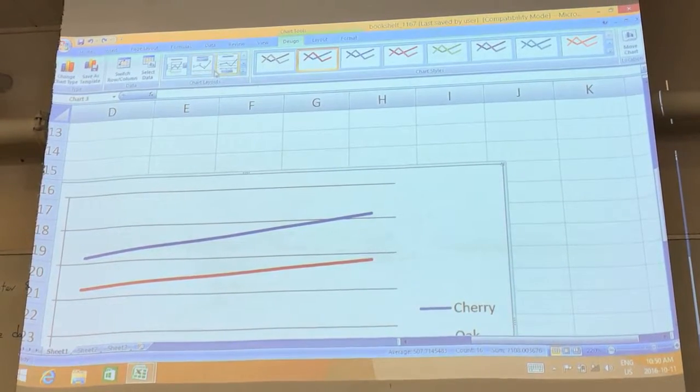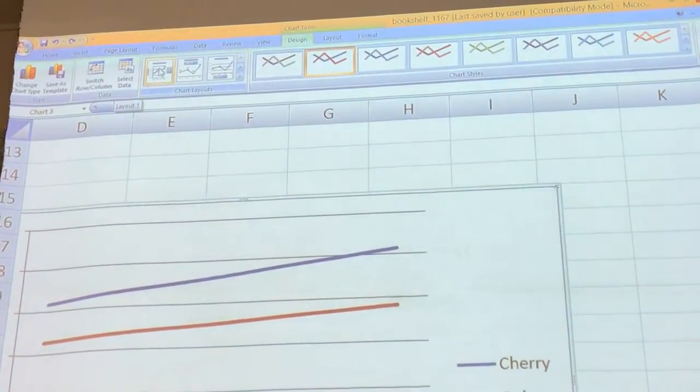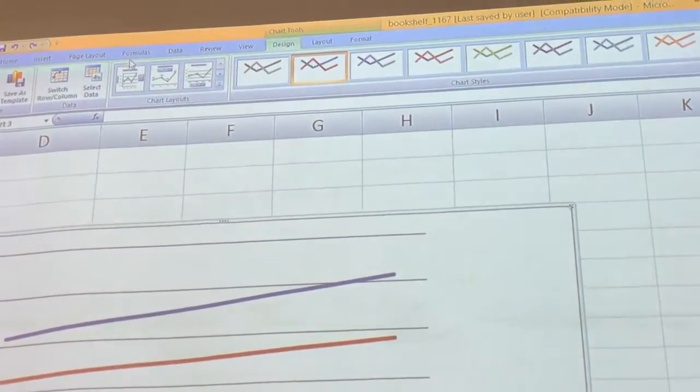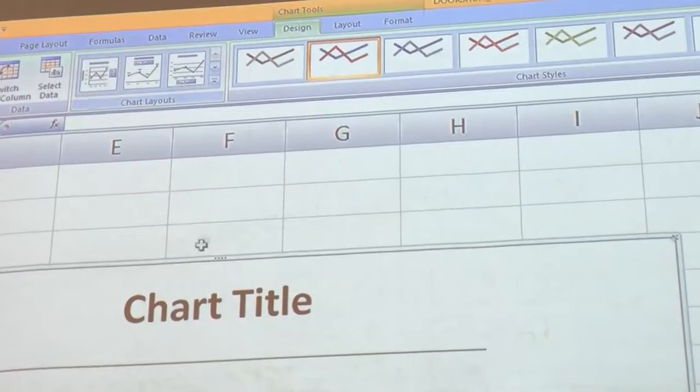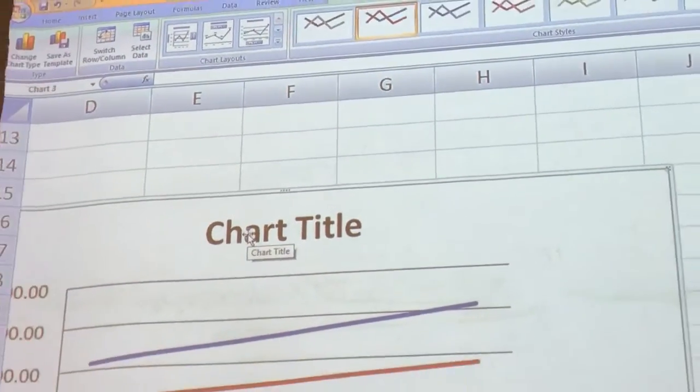To do that, we just go to building icon on the top, Layout, chart layout. You click here, it shows Chart title, and you click here again.